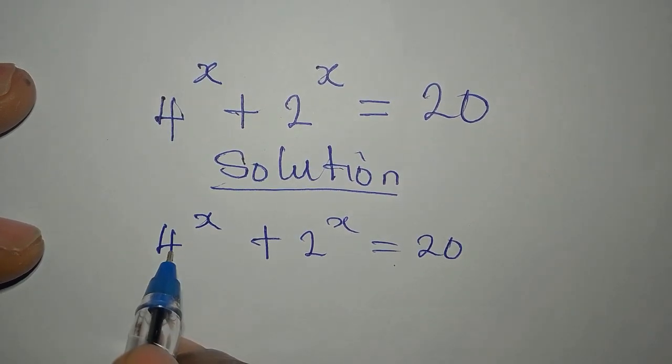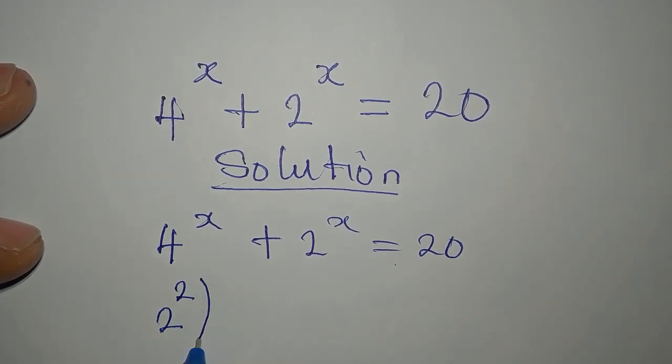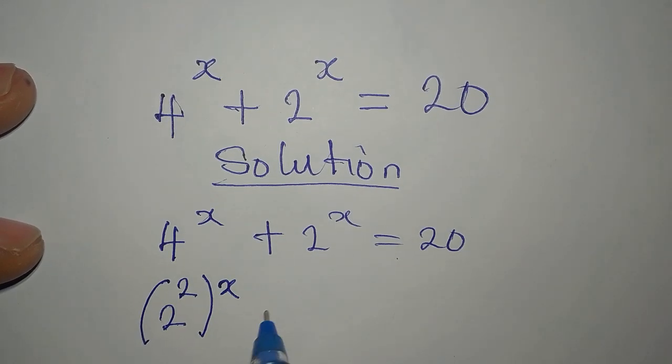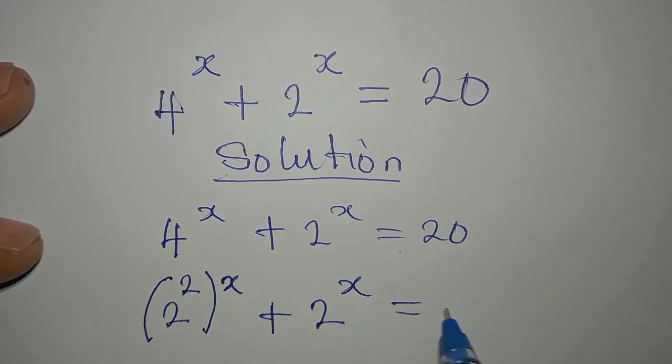Now, this 4 to the power of x is the same as 2 to the power of 2, then to the power of x, like this. Then plus 2 to the power of x, which is equal to 20.